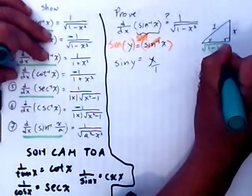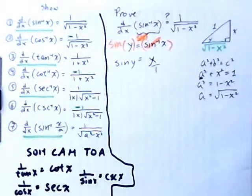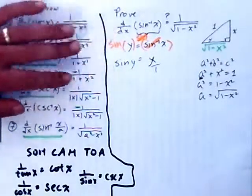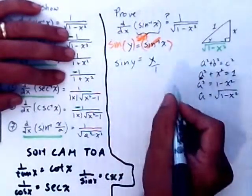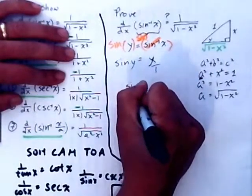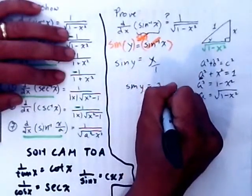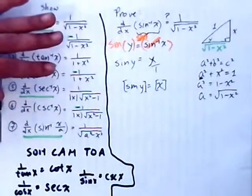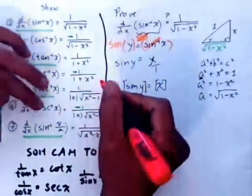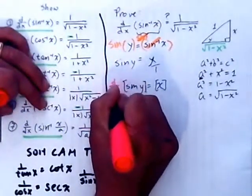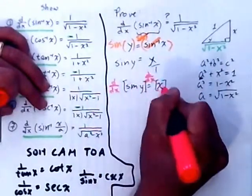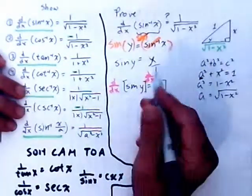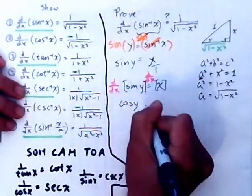Make sure you know how to get this third side consistently, because you're going to be doing it for the rest of the theorems and proofs. Now I'm going to rewrite it nicely: the sine of angle y is equal to x. And now I'm going to take the derivative of the left side and the derivative of the right side.